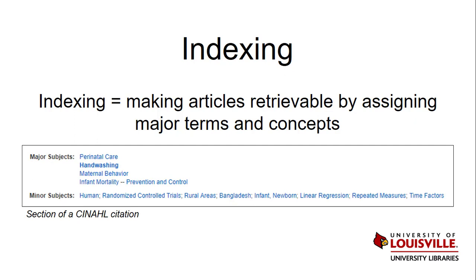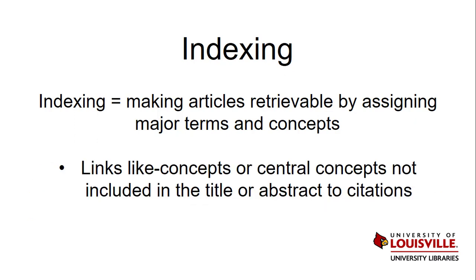I've included this section of a CINAHL record to give you an example of what this looks like and the types of terms that might be attached to a record. Indexing is important because sometimes a word that you or I might think is a major concept of an article isn't included in the title or abstract or summary of the article. The title and abstract are the main parts of an article that get searched in a database or by search engines like Google or Yahoo.